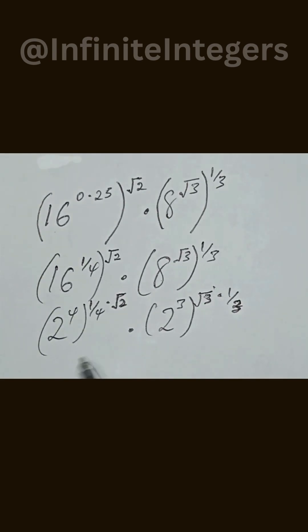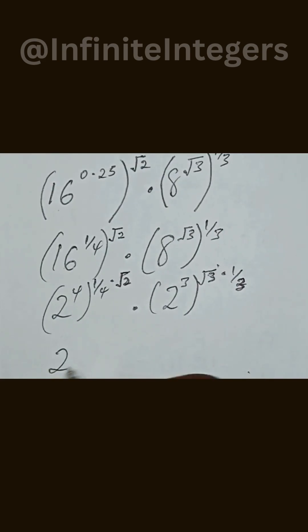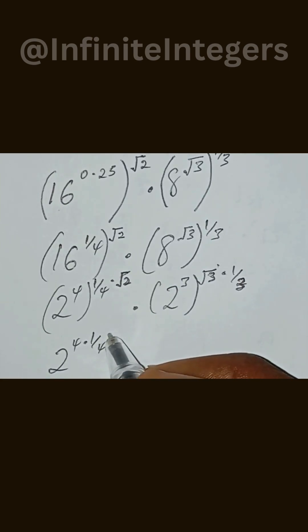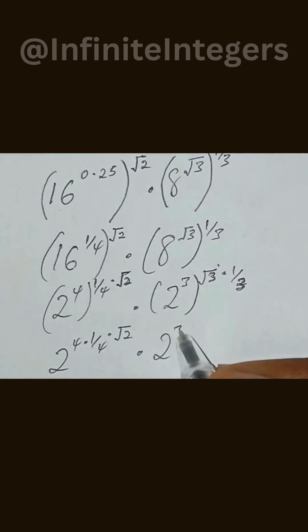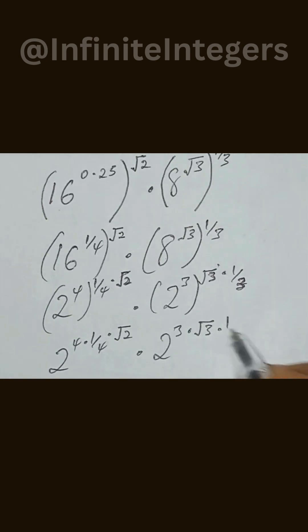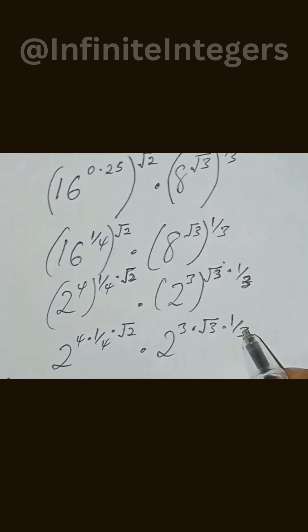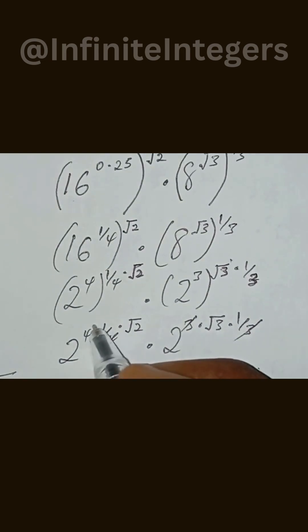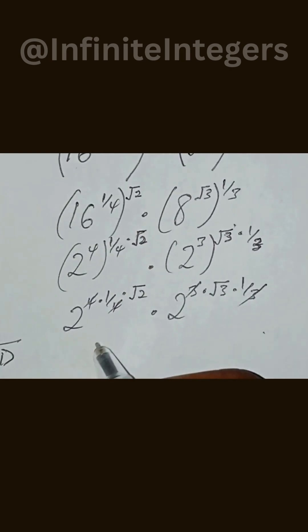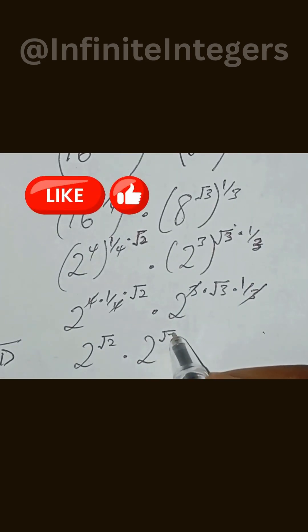So here we can write this as 2 to the power of 4 multiplied by 1 over 4, multiplied by square root 2. Then 2 to the power of 3, multiplied by square root 3, multiplied by 1 over 3 — to the power of 1 over 3. These cancel with each other, and these cancel as well. We get 2 to the power of square root 2, multiplied by 2 to the power of square root 3.